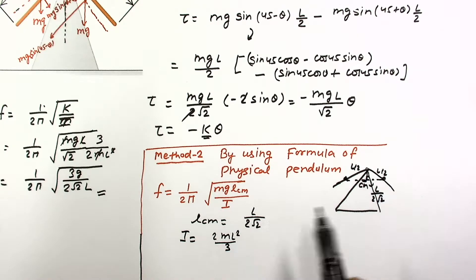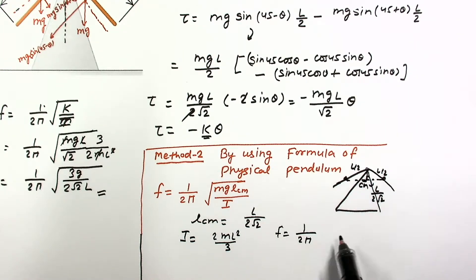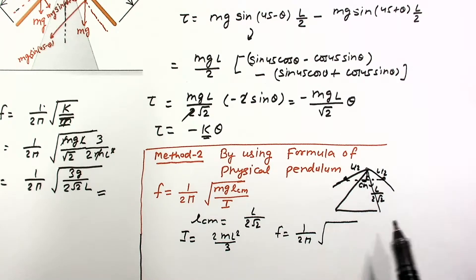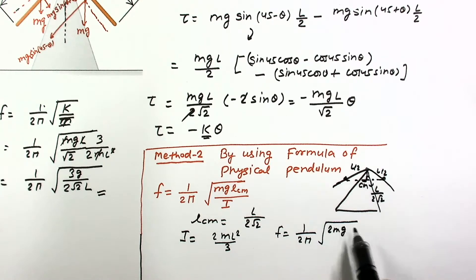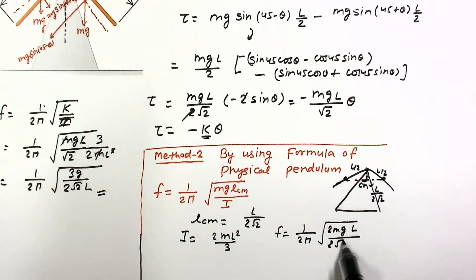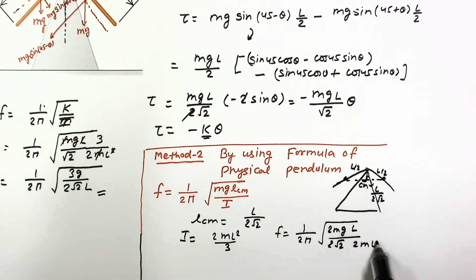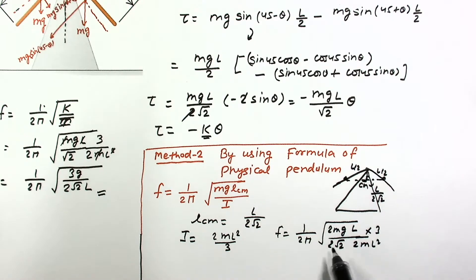Putting these values into the expression: total mass is 2M, l_cm = L/(2√2), and I = 2ML²/3. You can see that we get the same answer from this method as well, confirming our result.